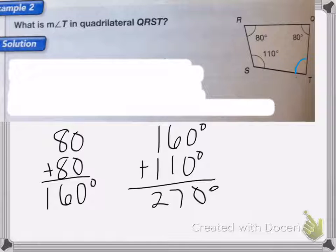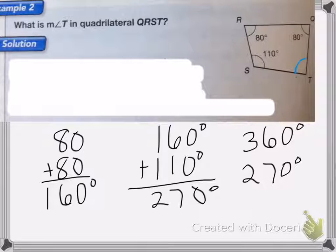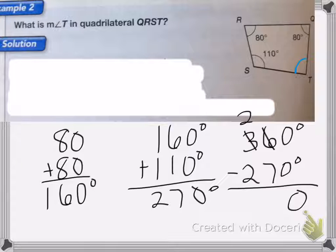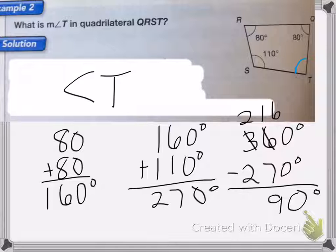So if the whole thing has to be 360, I'm going to subtract 270 degrees from 360. Borrow from the three. Three becomes a two. Six becomes a 16. 16 minus seven is nine. Two minus two is zero. So angle T has to equal 90 degrees.